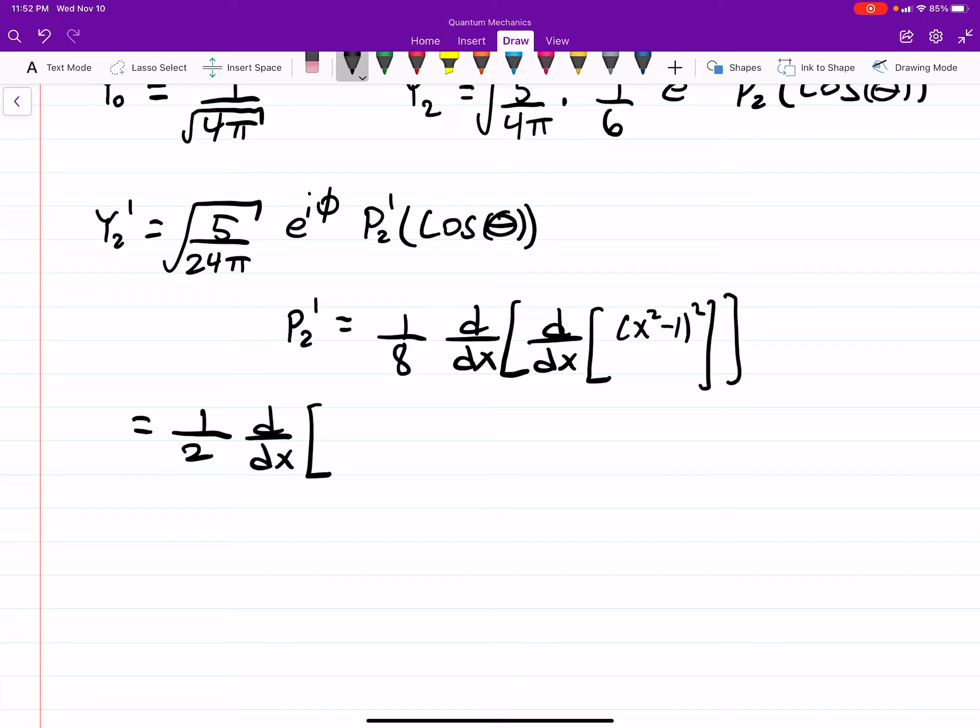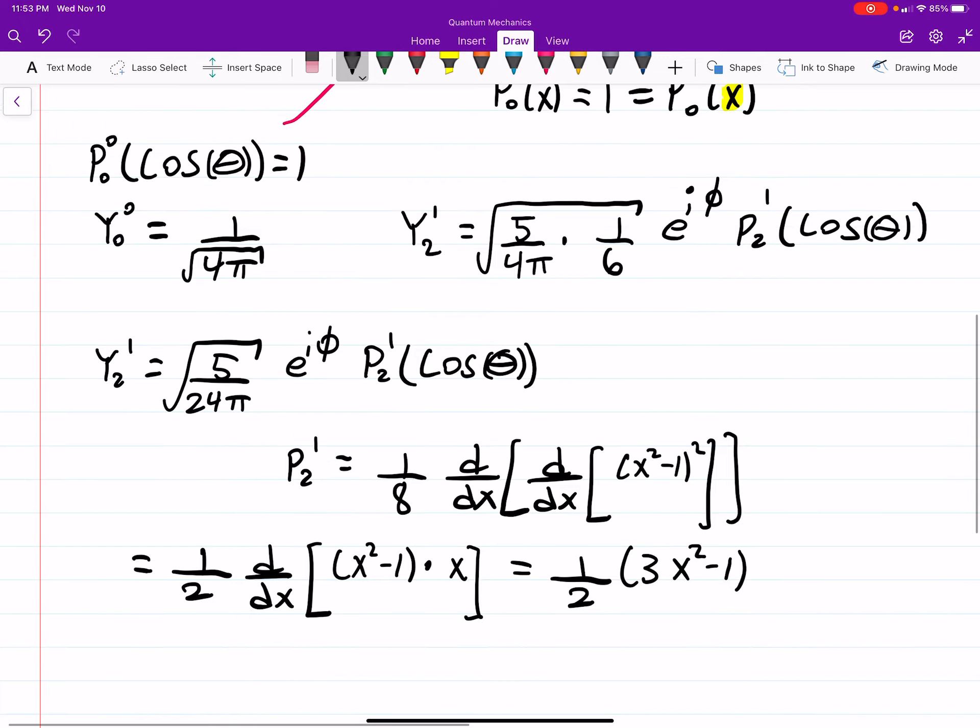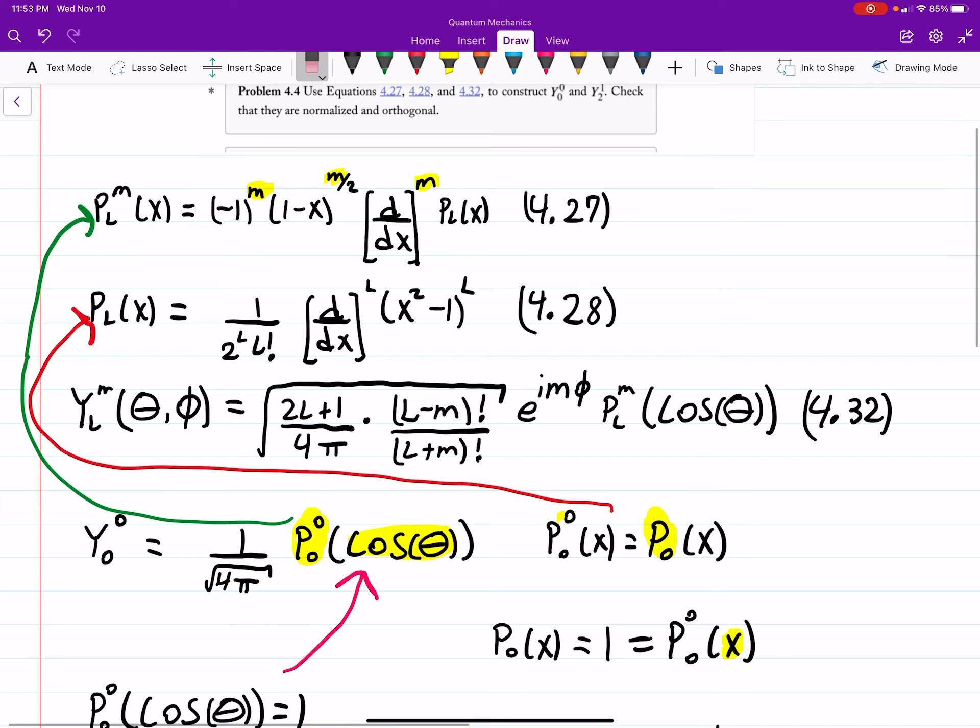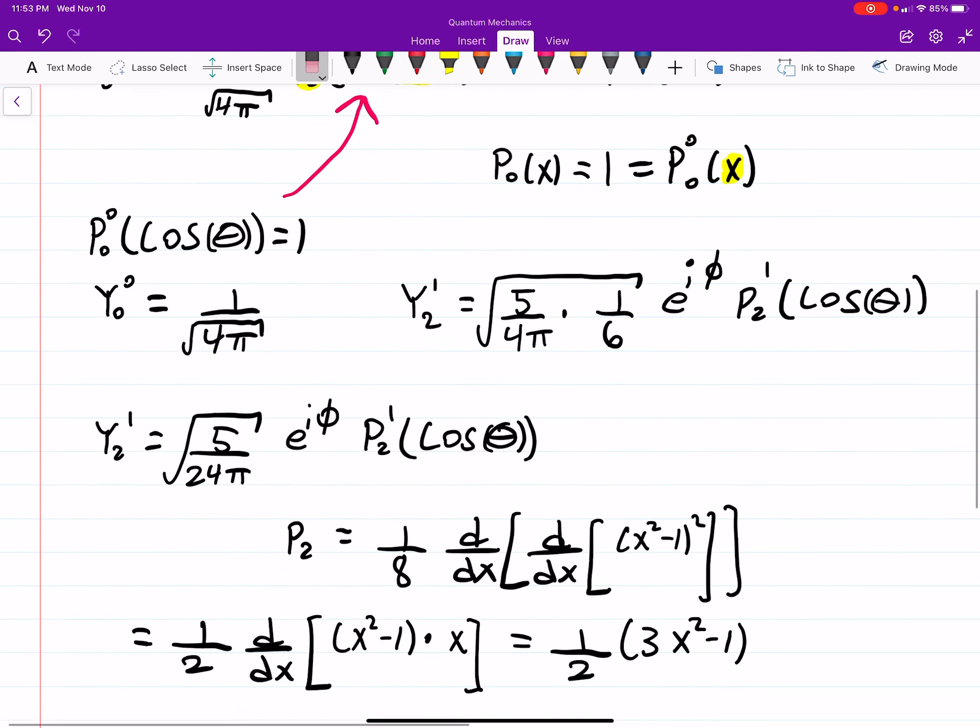This is equal to 1/2 d/dx of (x² - 1) times x, or 1/2 times (3x² - 1). And then, I'm sorry, this is P₂ that we found, not P₂¹. Yeah, we did the red one first. My bad. But it's fine, it doesn't really matter.